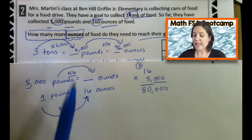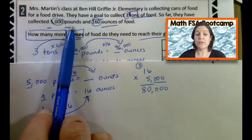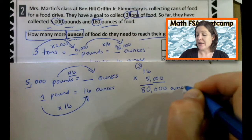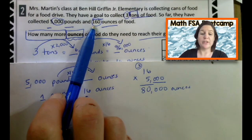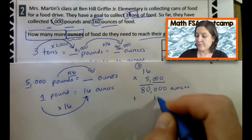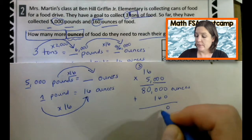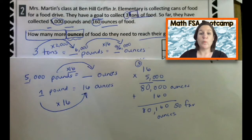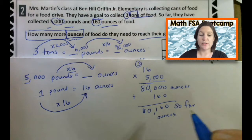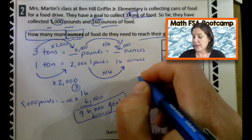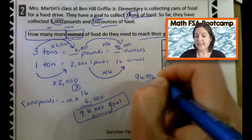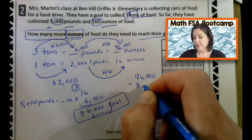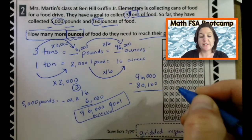So, they have collected 5,000 pounds, which is equivalent to 80,000 ounces of food. Well, let's not forget that they also had 160 ounces. So, let's add that on. This is what they have so far. They have 80,160 ounces so far. Now we have to take what we know is their goal, 96,000 minus how much they currently have, which is that number 80,160. And we're going to subtract.